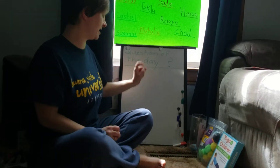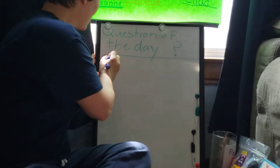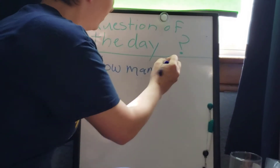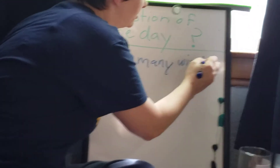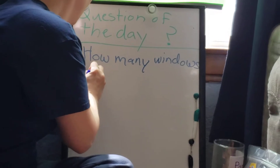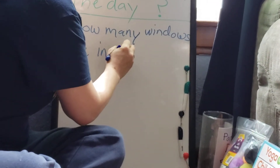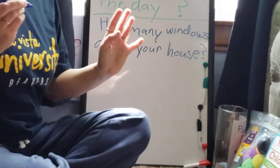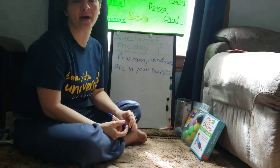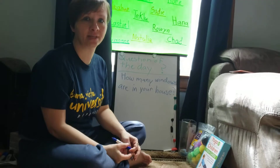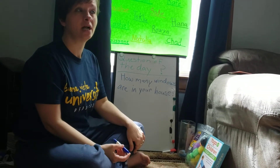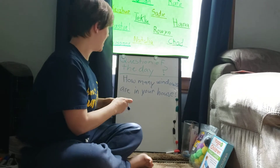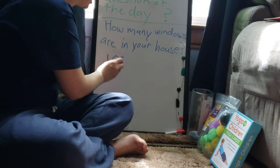So, question of the day. Today's question of the day is: how many windows are in your house? Miss Suzanne cheated — I already counted all my windows. You guys might need to go count your windows now. You can pause it or you can count them later. You can think about how many are in each room. Here's a window right here and I have another window over there, but in my whole house I have ten windows. A one and a zero makes ten.